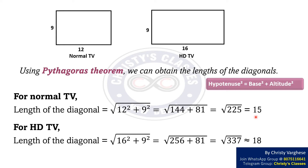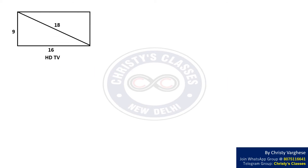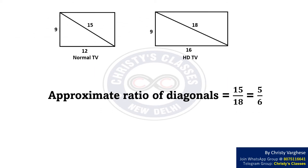For the HDTV, the length of the diagonal equals root of 16 squared plus 9 squared, which equals root of 256 plus 81, which equals root of 337, approximately equal to 18. So the length of the HDTV diagonal is approximately 18. The approximate ratio of the diagonals is 15 to 18, which simplifies to 5 to 6.